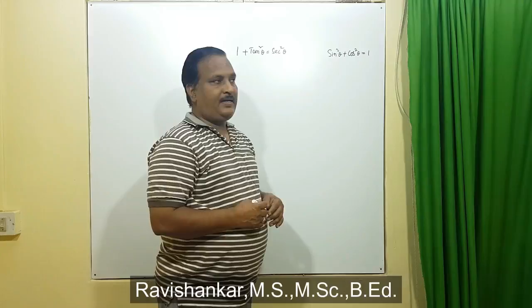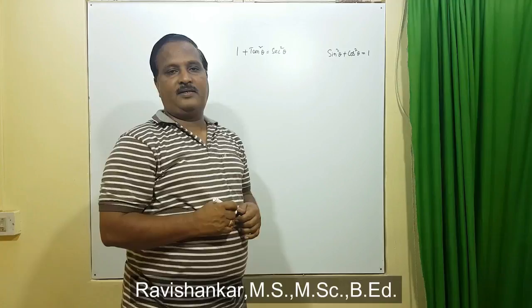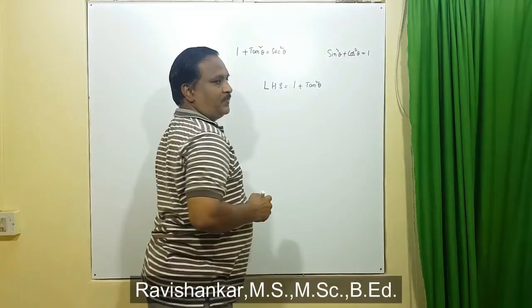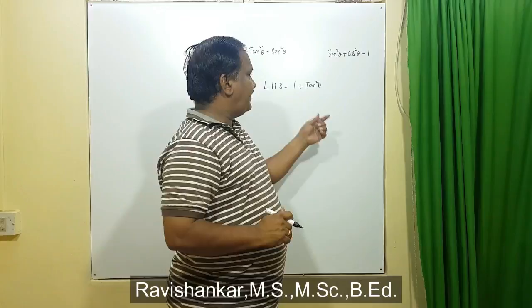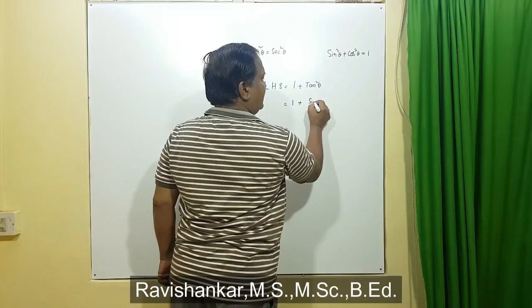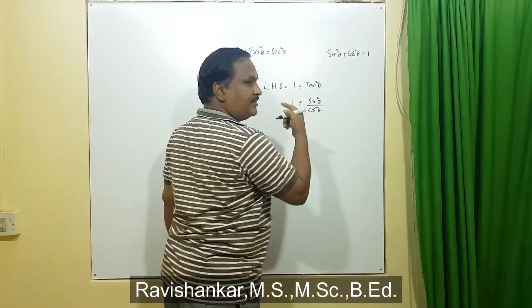Now let us use another method — let us apply this in proving this result. Let us take the left hand side. Left hand side is equal to 1 plus tan square theta. Now we know only the sin and cos relation, but here we have tan. So let us convert tan into sin and cos. The relation between tan, sin, and cos is: tan theta is equal to sin theta by cos theta.